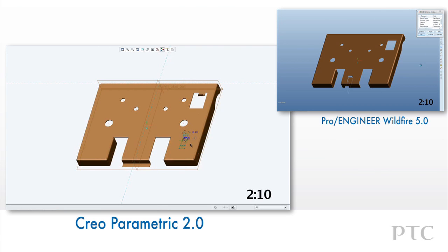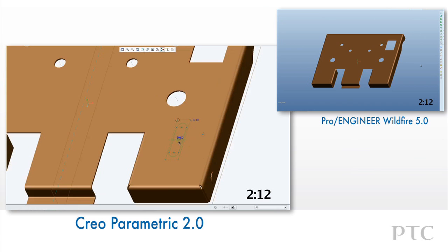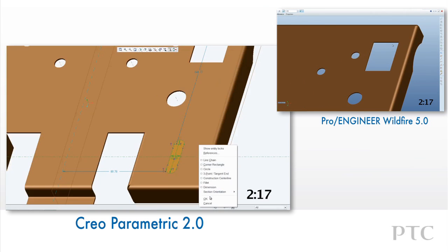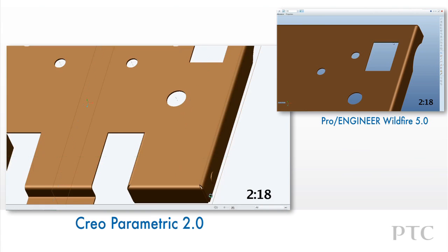In Pro Engineer Wildfire 5, we would have had to create a separate form part to accomplish this, or a quilt with the draft geometry already built in prior to creating the form feature.